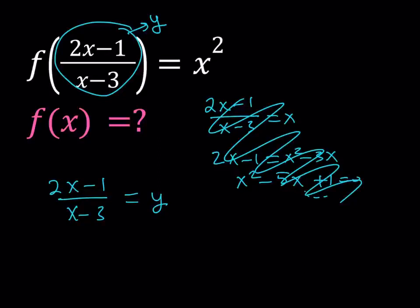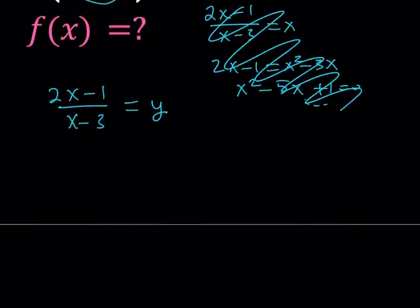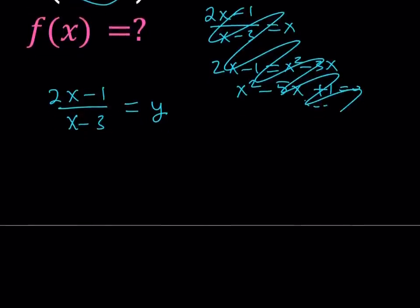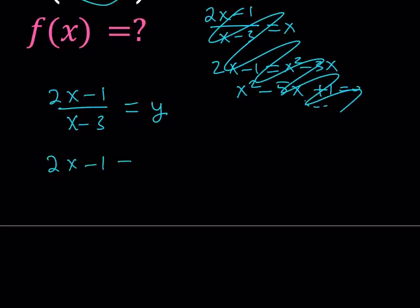So now, what happens on the right-hand side? Since I have x squared, I have to be able to replace x with something. So let's go ahead and solve this in terms of x. Cross multiply. And then I want to solve for x. So I want to bring the 3y over here and the 2x here. In other words, I'm subtracting 2x from both sides and I'm adding 3y to both sides.